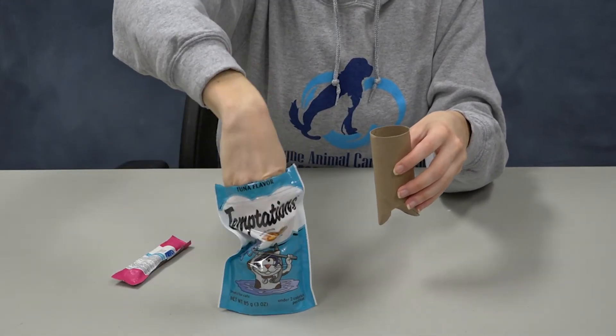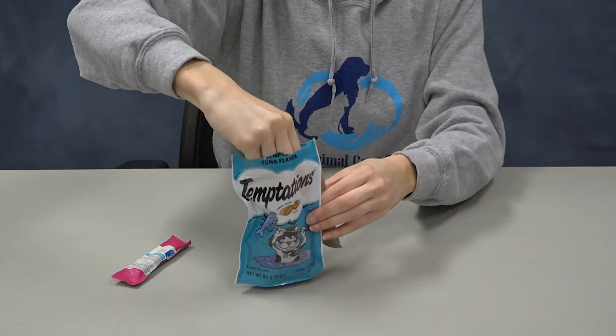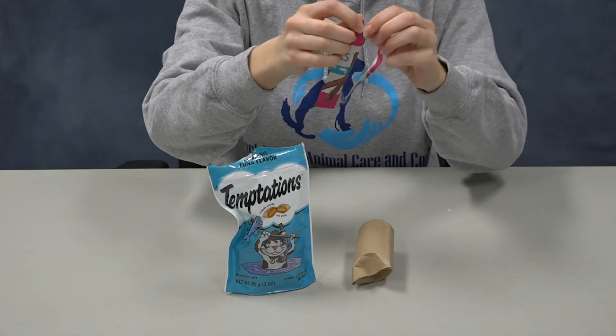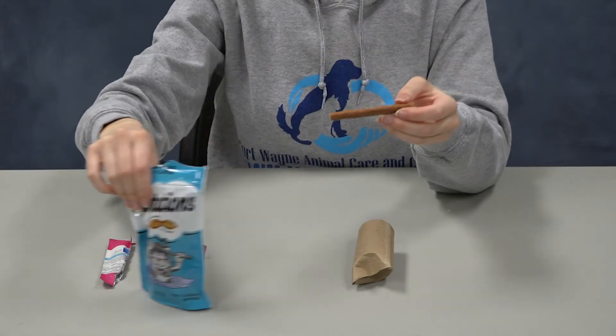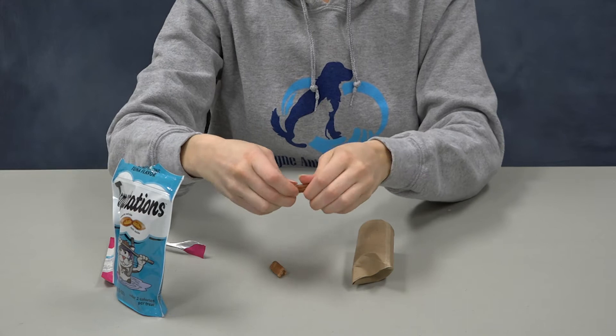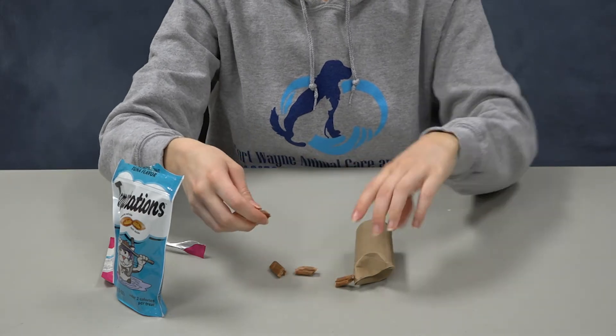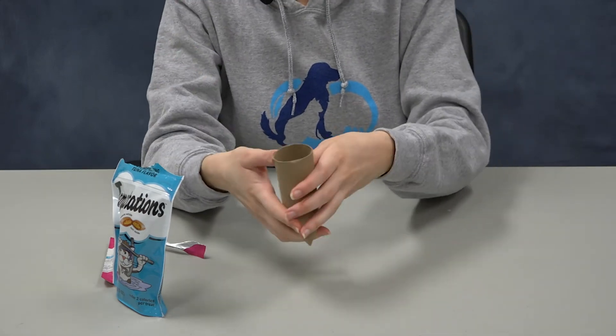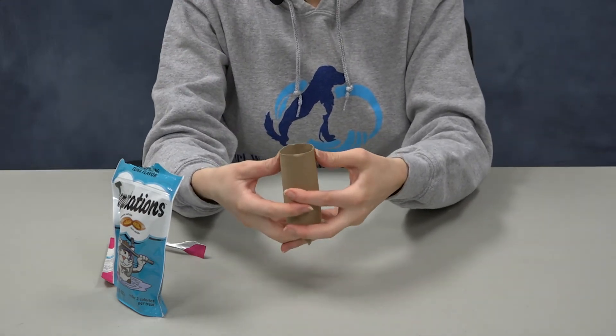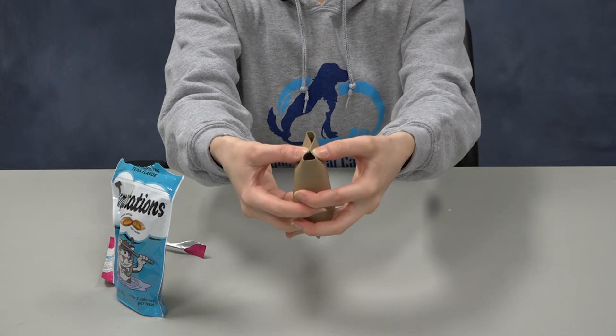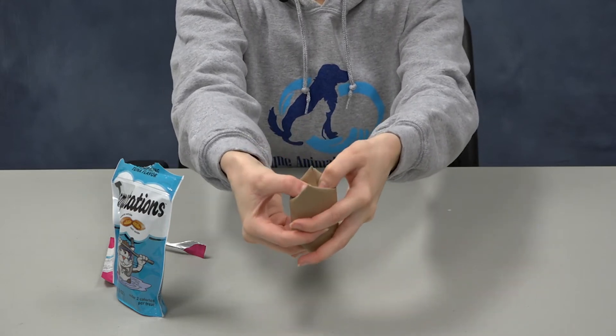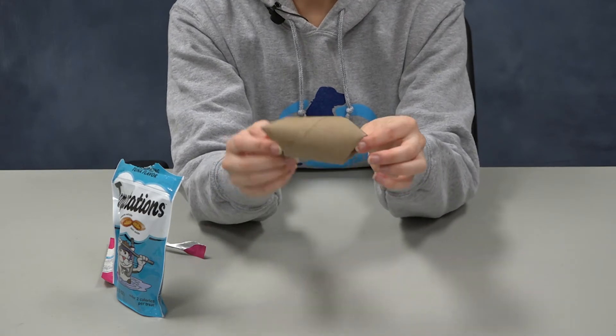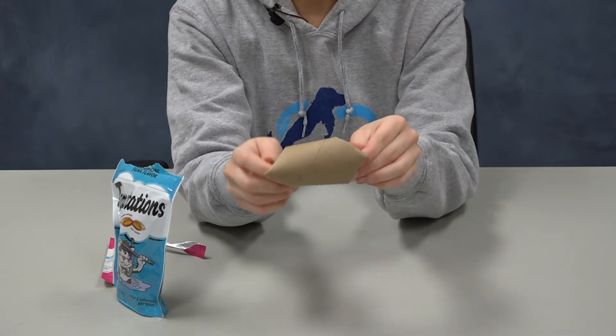So you're going to take your cat's treats and drop them in. We're going to take this stick and it pulls apart. So you're just going to pull little chunks apart and throw them in. You don't want to put too many treats in so that your cat doesn't get a tummy ache. And then to close it, you're going to do the same thing and push down. And then your toilet paper roll is closed, and your cat can sniff out the treats inside and try to figure out how to open it.